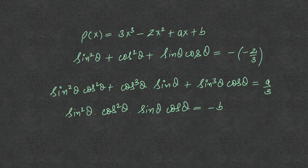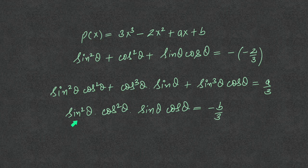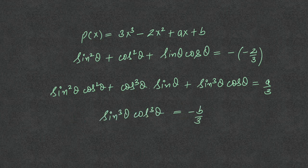The product of roots taken two at a time finally becomes sin³θ·cos³θ, equal to -b/3. We name these as equation 1, equation 2, and equation 3.